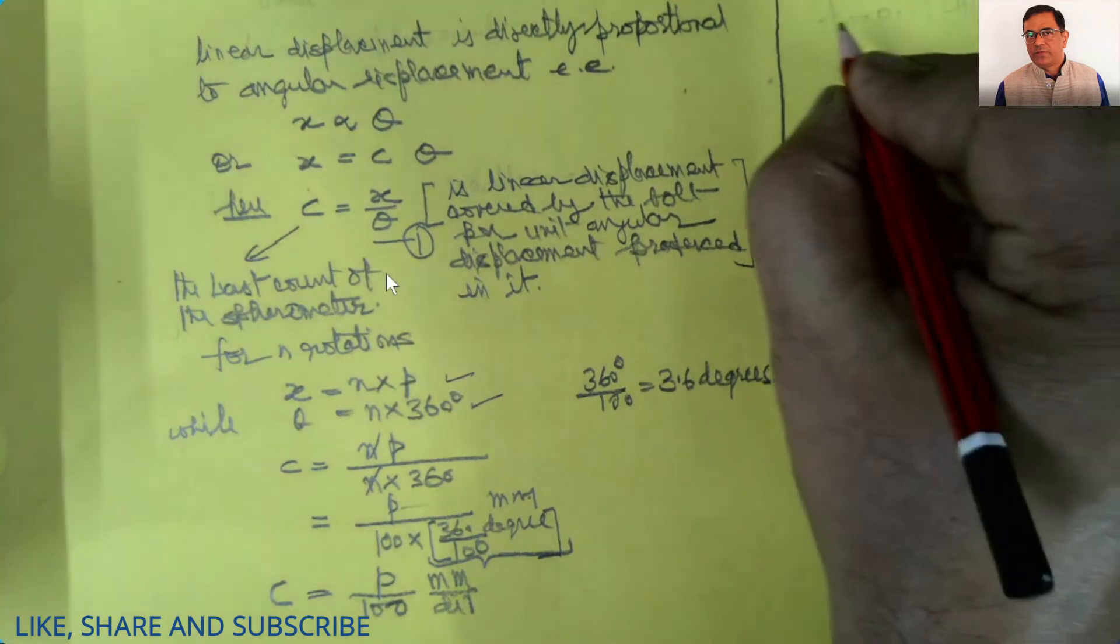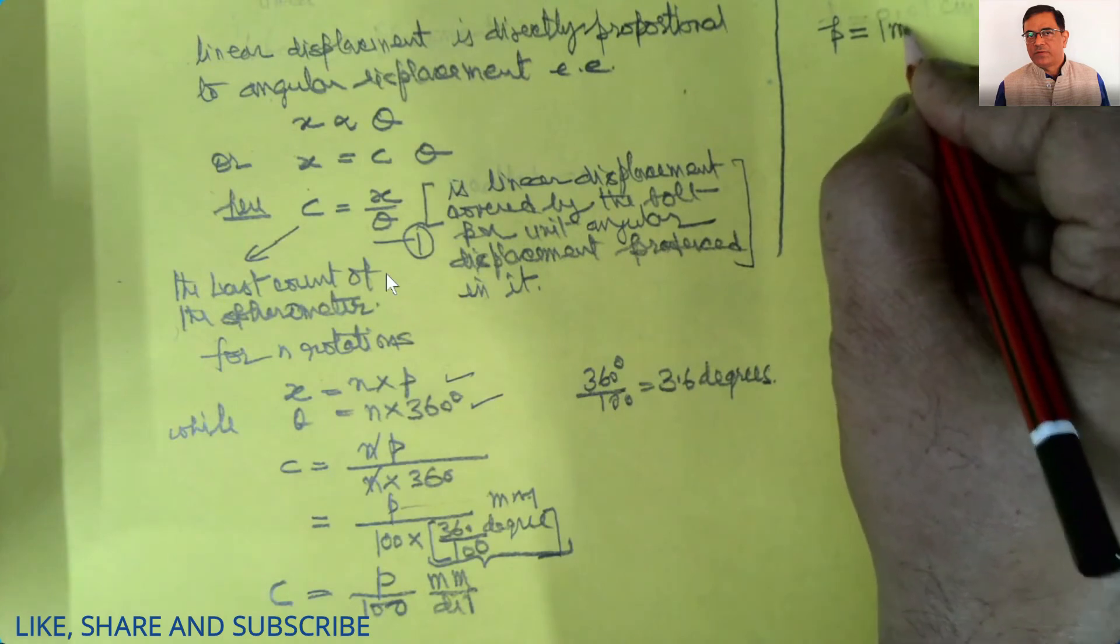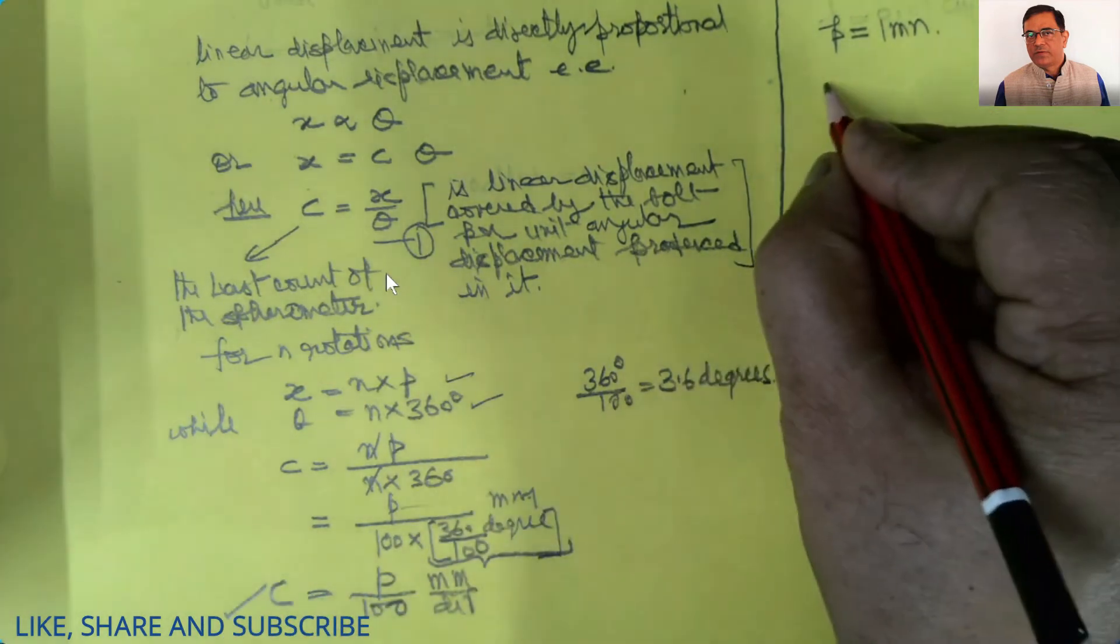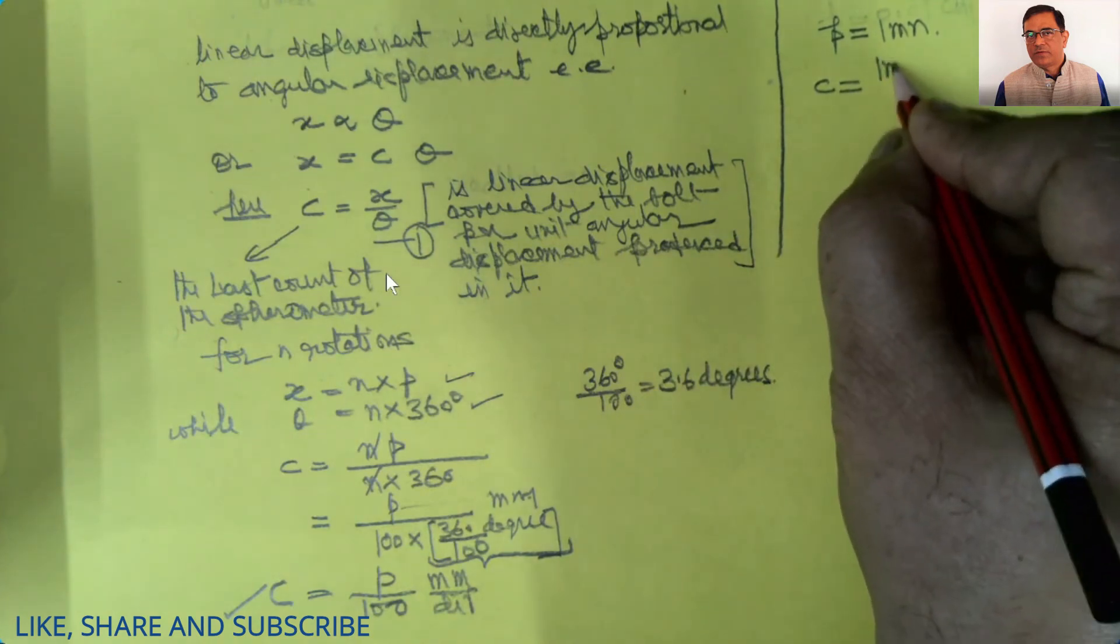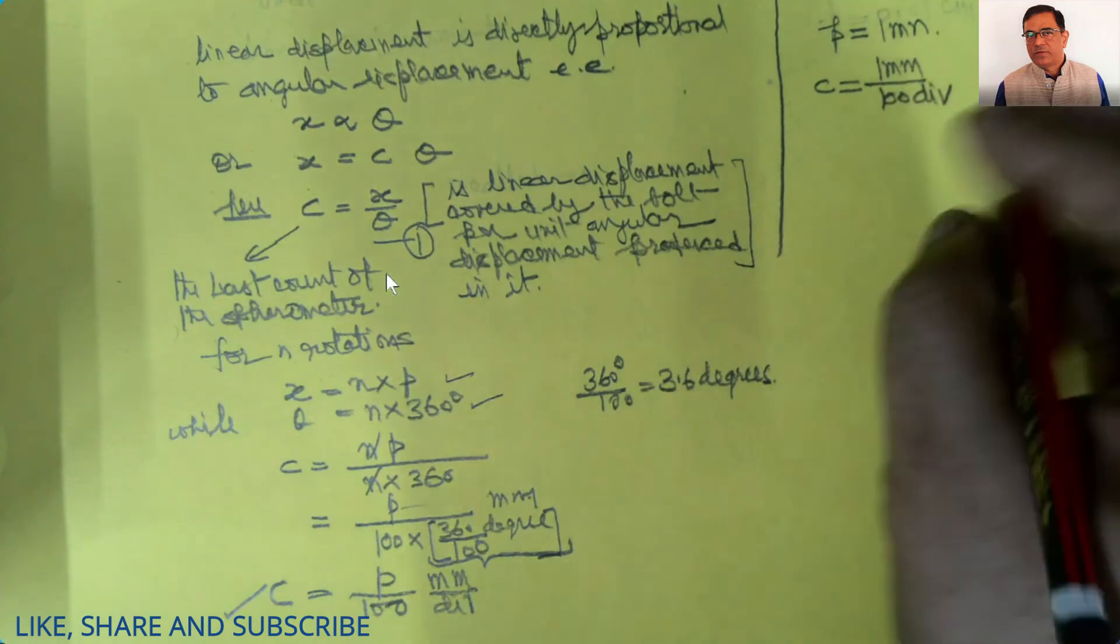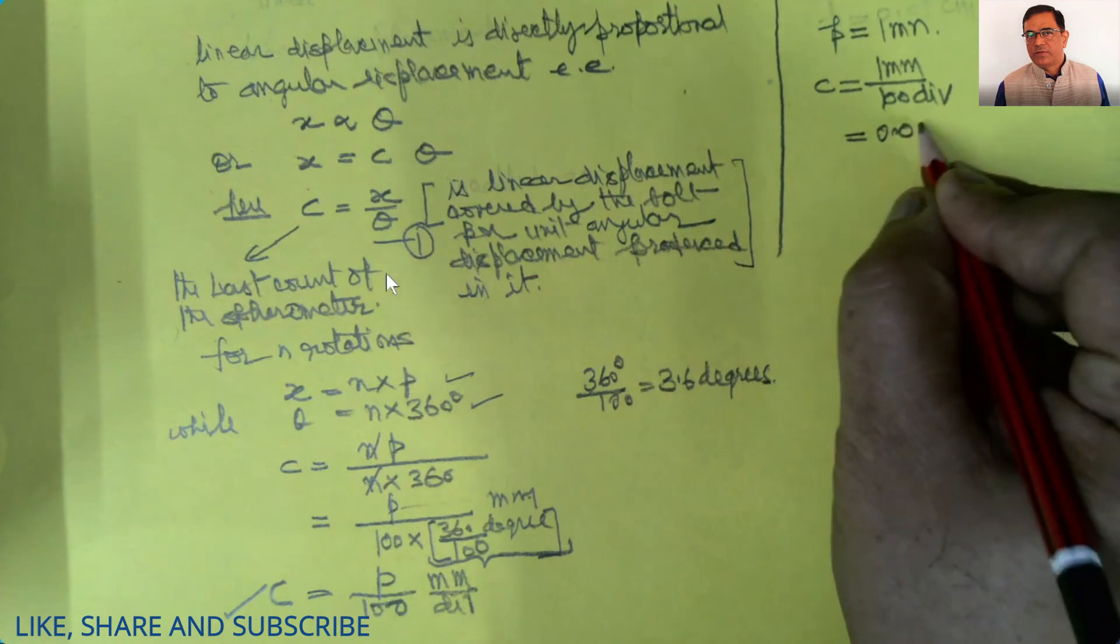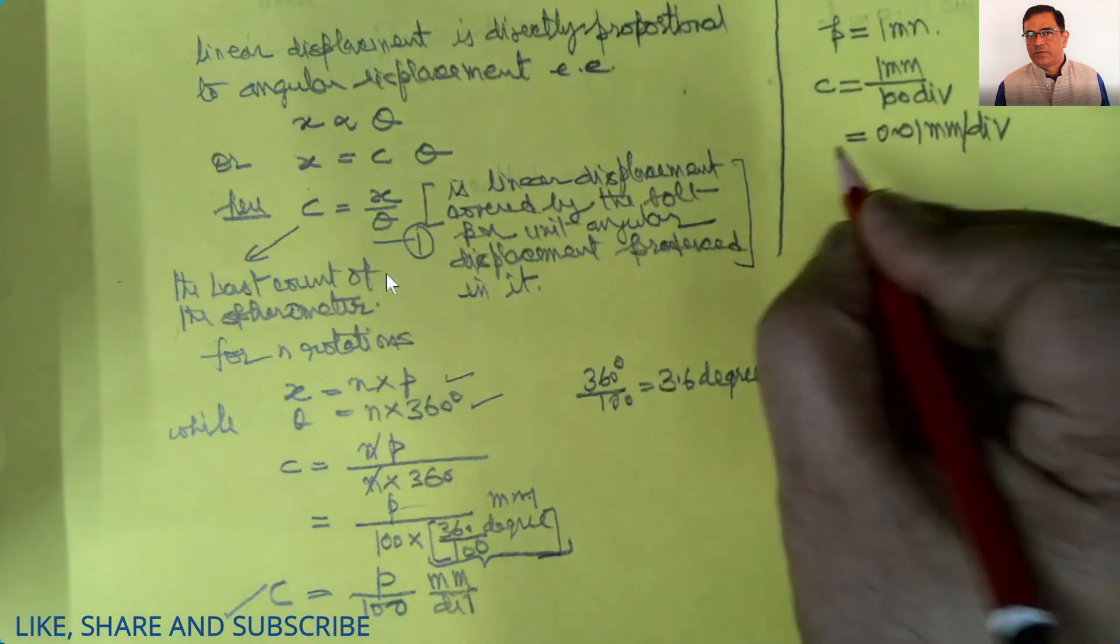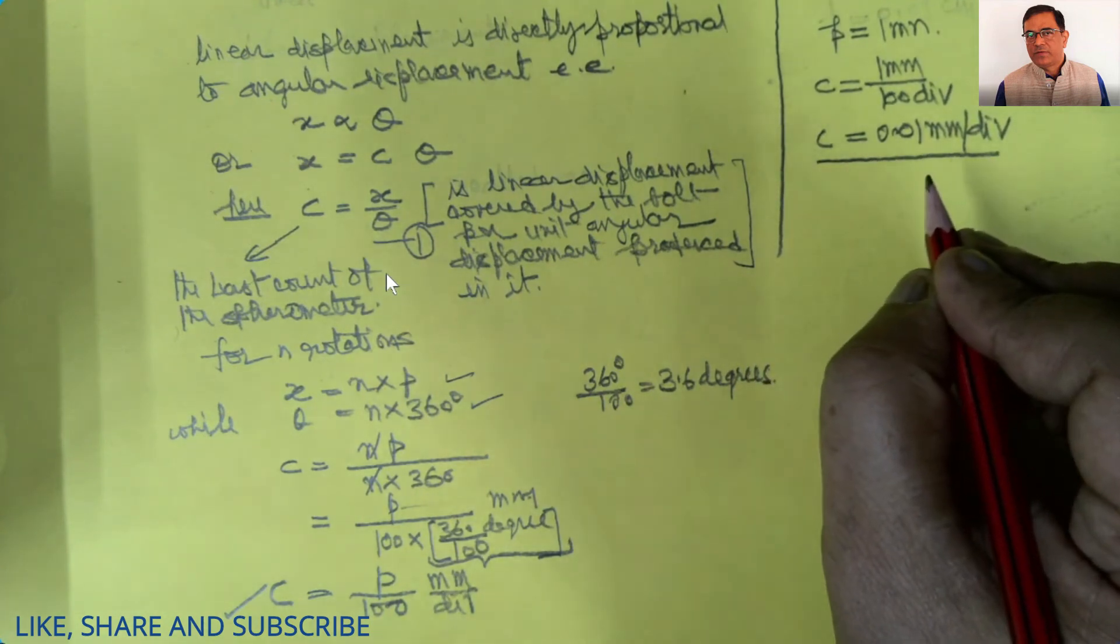In our case, pitch equals 1 millimeter, and hence the least count of this spherometer is given by c equals 1 millimeter divided by 100 divisions, which equals 0.01 millimeters per division. So this is the least count of the spherometer I am using.